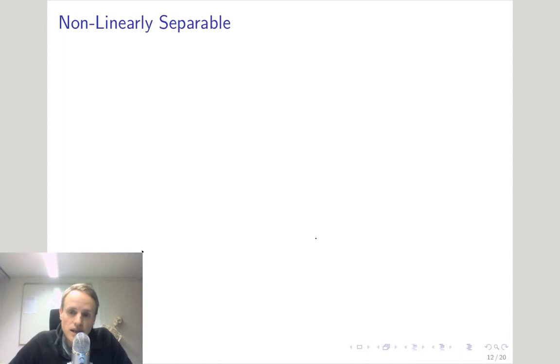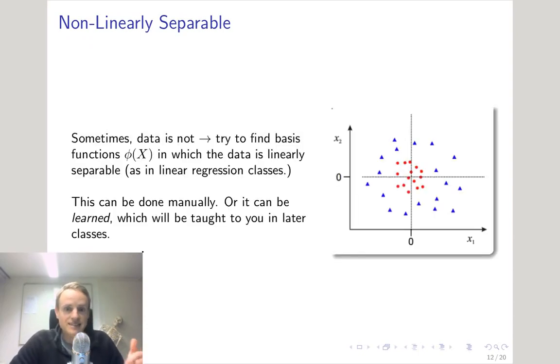So what do you do when data isn't linearly separable with a simple W transpose X plus B equation that we talked about before? Well, if you remember back to the lecture on linear regression, what we can do with an algorithm that is in the W X plus B form is... Come on, what can we do? Yes, exactly. We can introduce a basis function over the X.